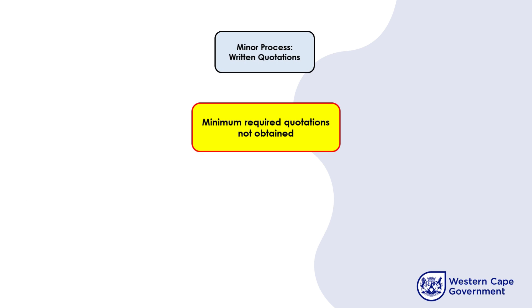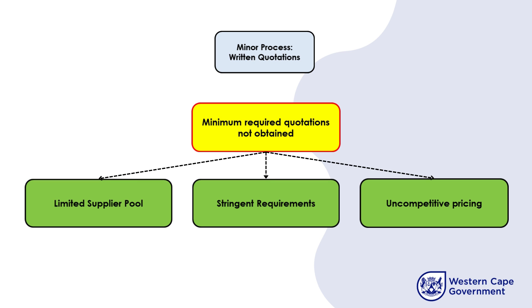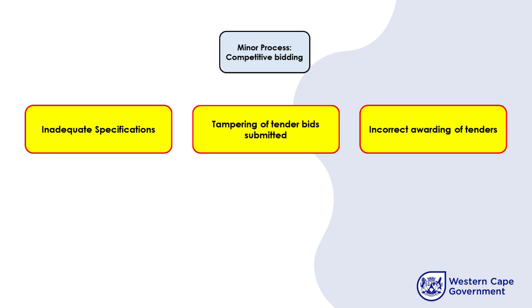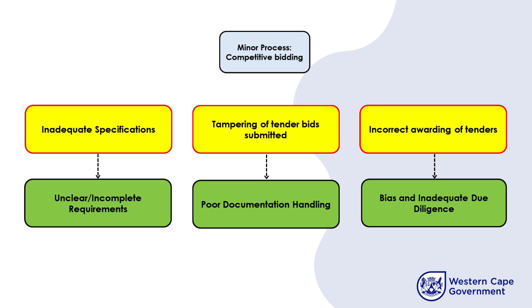For the written quotation process, a typical risk is not obtaining the minimum required quotations for procurement, due to a limited pool of qualified suppliers, requirements that are too strict or specific, or uncompetitive pricing making services too expensive. For competitive bidding, typical risks are incorrect specifications, tampering of bid documents, and incorrect awarding of tenders. The contributing factors are unclear or incomplete requirements, poor handling or safekeeping of bid documents, bias, and inadequate due diligence in the decision-making process.